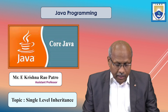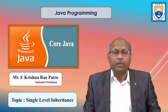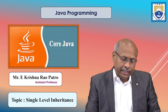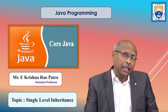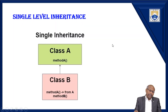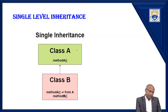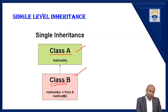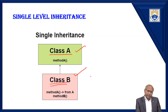Hello everybody, I am E. Krishnan Rao Patron. Today we will see one application on single level inheritance — how you can implement single level inheritance in Java with a special application. When I say single level inheritance, there will always be a minimum of two classes. One is a parent class, another is a child class. Whatever methods and properties are available with the parent, the same will also be available to the child. That is the nature of inheritance.